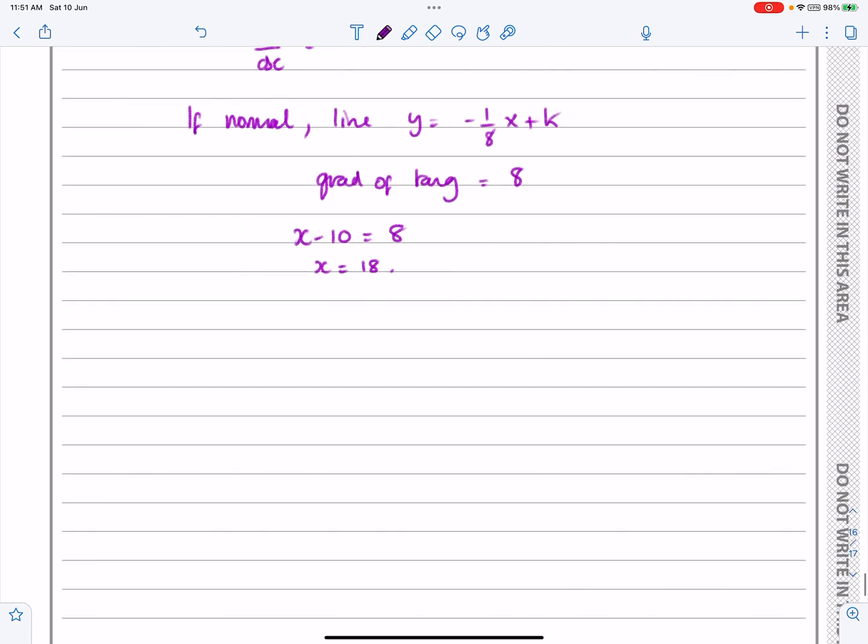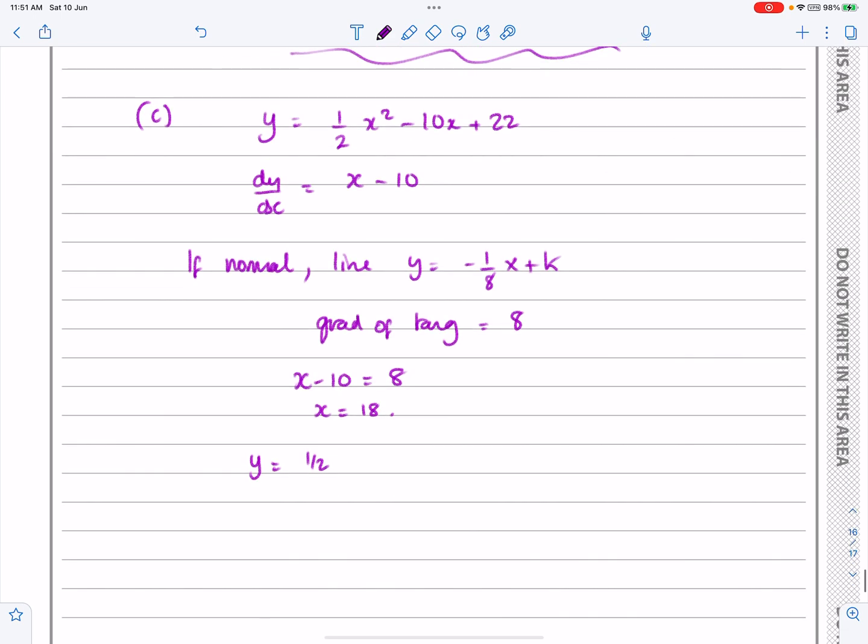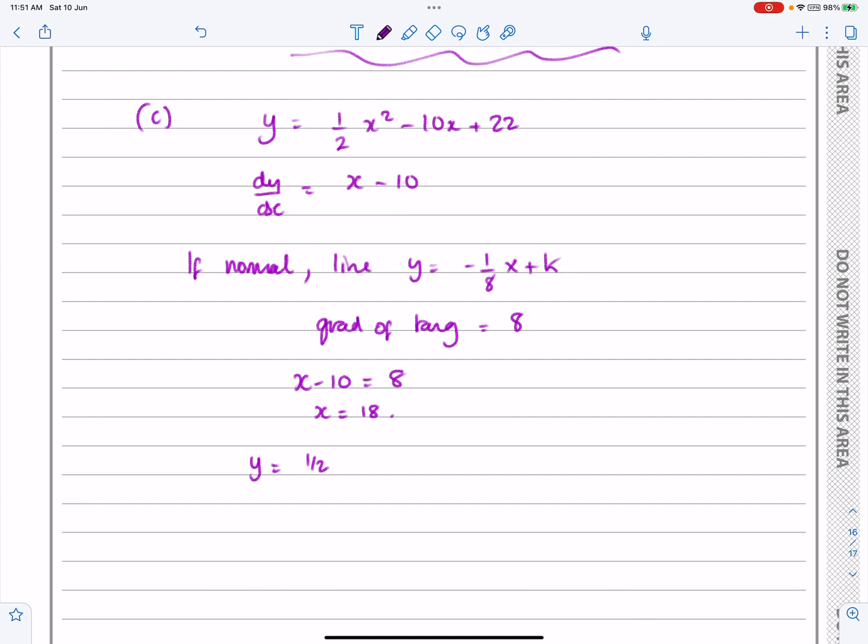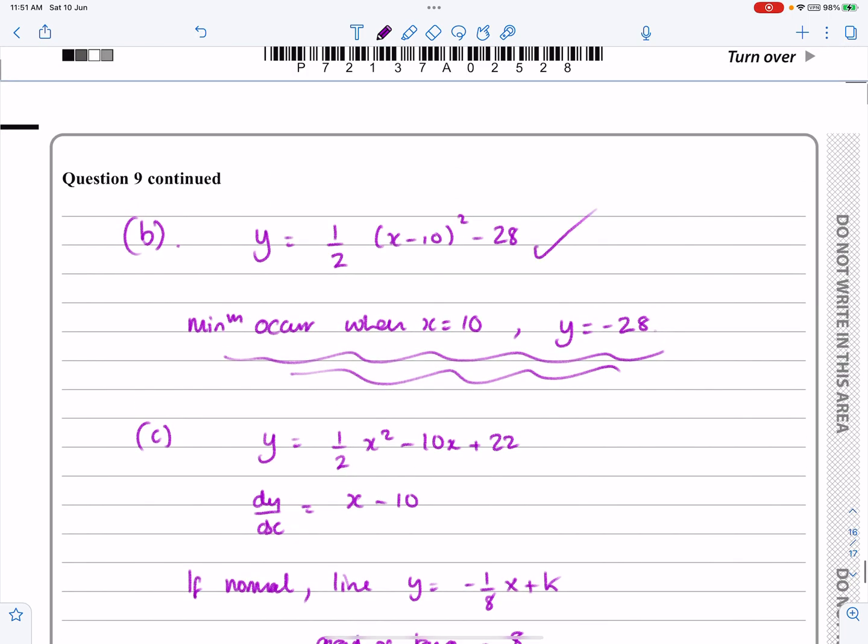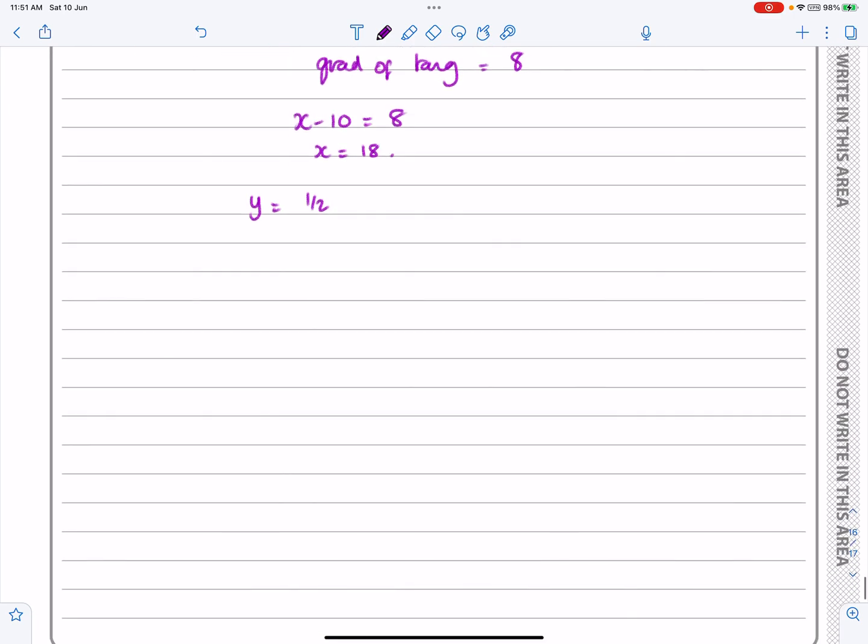And if I've got x equals 18, I can plug that now into my curve. y equals a half. Now you can either use half 18 squared minus 10 lots of 18 plus 22. But we have already got it written like that as well, and that's a bit quicker to do. So I'm going to say a half, (18 minus 10) squared minus 28, just because that's a little bit quicker to work out. So that's going to work out to be 4 there. So P now has the coordinates (18, 4).